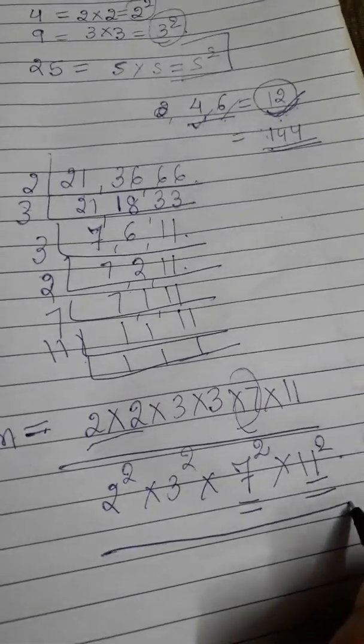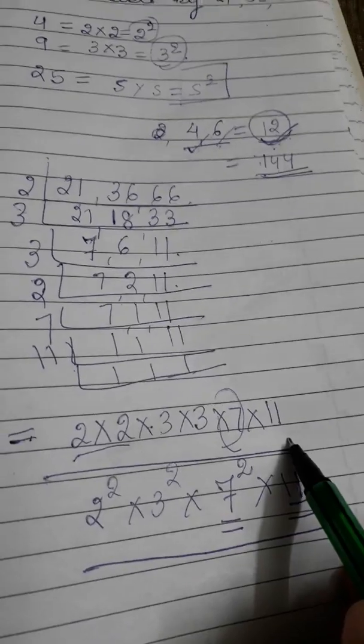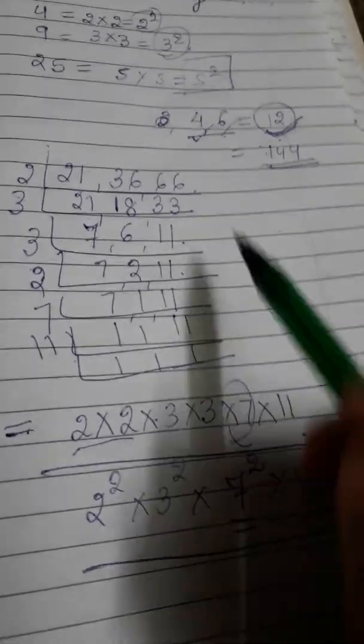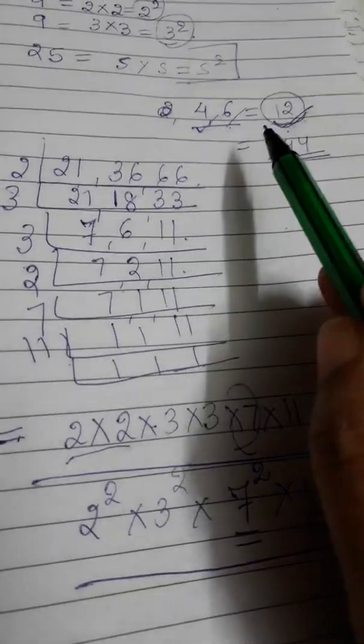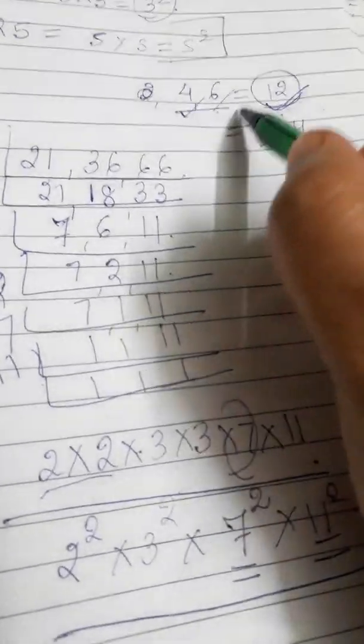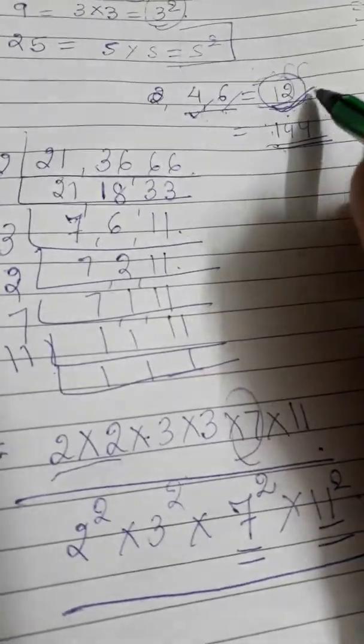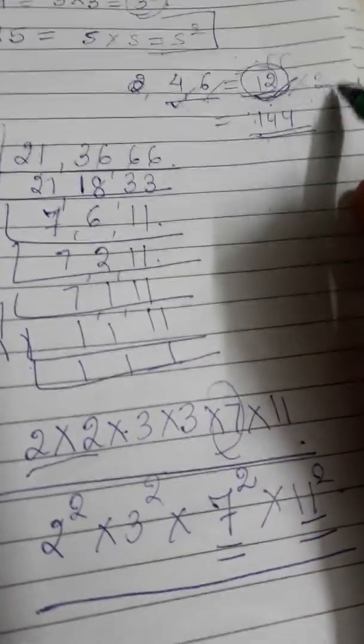So this new number, this is the original LCM. Now LCM, if I am multiplying by any number, look here everybody, this is the LCM for 4 and 6.